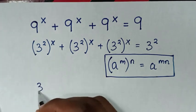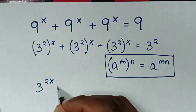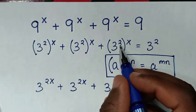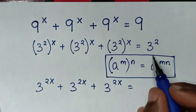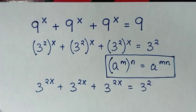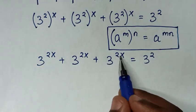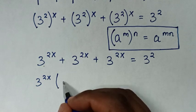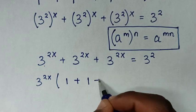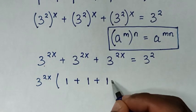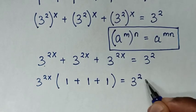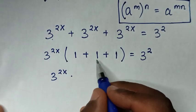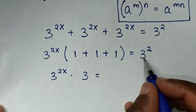So it will be 3 power 2x plus 3 power 2x plus 3 power 2x is equal to 3 power 2. In the next step, 3 power 2x is common, so we take 3 power 2x out of the bracket. Each term divided by 3 power 2x gives 1, so we get 3 power 2x times (1 plus 1 plus 1), which is 3, equal to 3 squared.